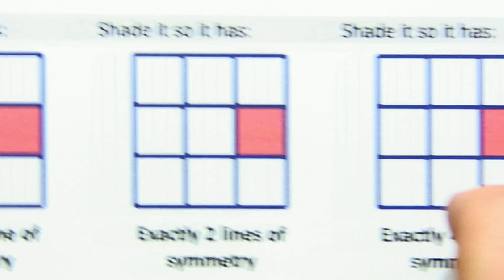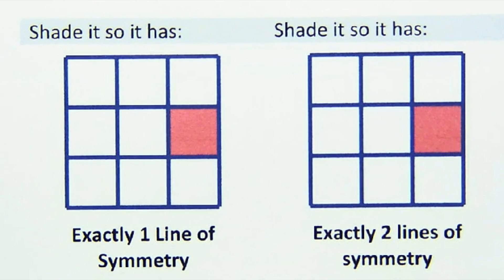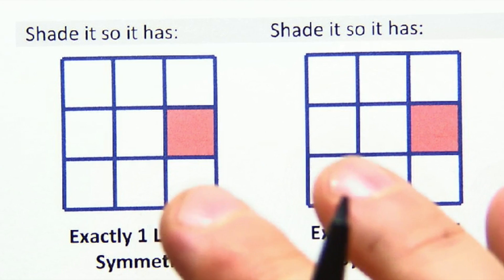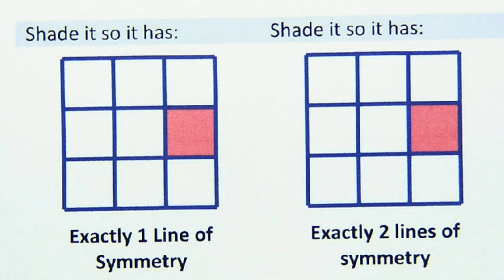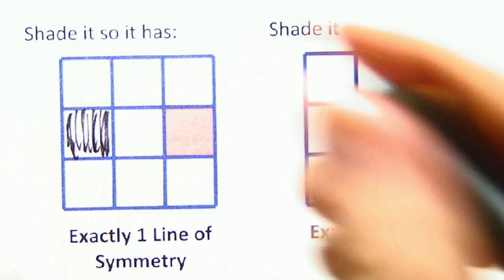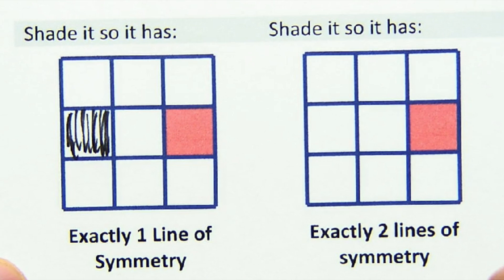Now, one of the things that you'll be asked to do, and I quite like these, is to design through shading something that has exactly one line of symmetry. Now, some of you might say, oh, well, let's just shade in this box, and we're done. Well, no, not quite.